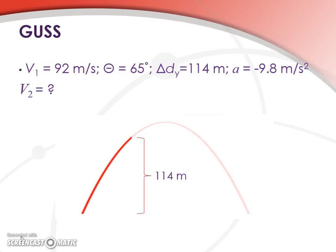Okay, so we can start out by laying out what we know. We know that our overall velocity is 92 meters per second. Our angle is 65 degrees. The height at which we have impact is 114 meters. And of course our acceleration due to gravity of negative 9.8 meters per second squared. What we want to know is what's V2.